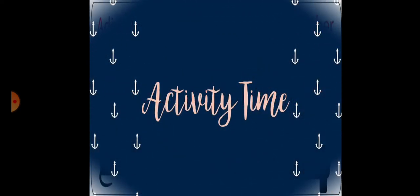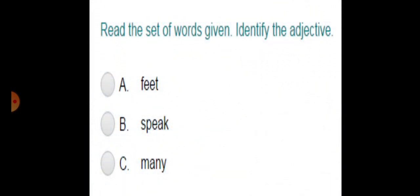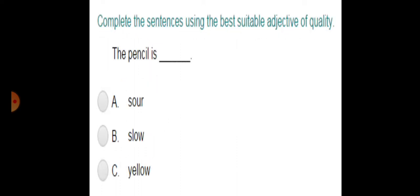Now this is the time for activity. I hope you will learn from this activity. This is so easy, you can practice right now. You have to read the set of these words given and you have to identify the adjective. Yeh teen words hain, in teeno mein se adjective kaun sa hai viewers? Yeh aapne batana hai. Next one is: complete the sentences using the best suitable adjective of quality.